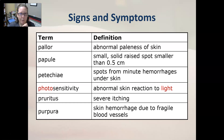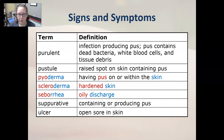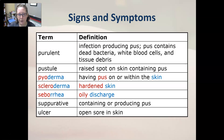Purpura is often seen in the hands of people on blood thinners, whose hands look a purpley color, but it's different than a bruise. Purulent is an infection producing pus — the pus contains dead bacteria, white blood cells, and tissue debris. A pustule is a raised spot on the skin that contains pus. Pyoderma means having pus on or within the skin.